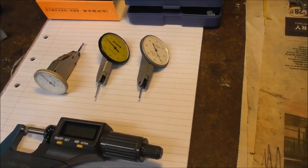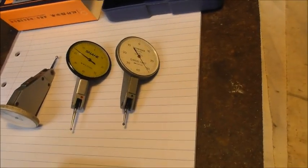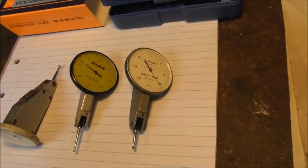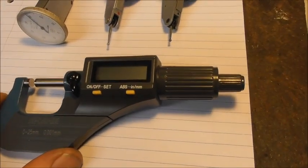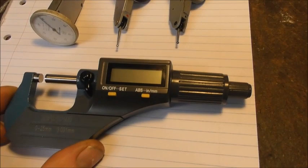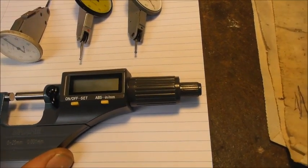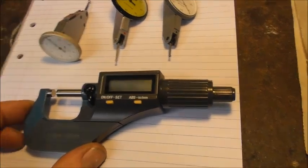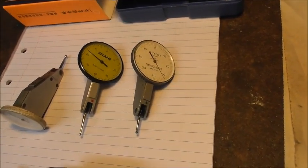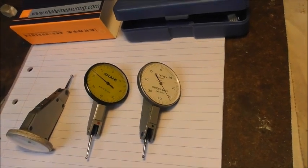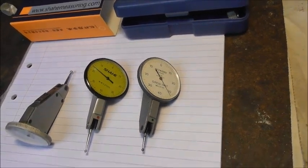In this video we're going to compare a reasonably good quality Chinese lever indicator, the Shahi. I've got a Shahi micrometer and it's better than the average cheap Chinese micrometer. I've read several reviews online and they are quite highly rated. They're more expensive than the cheapest Chinese measuring instruments but they are a lot cheaper than Swiss or Japanese.